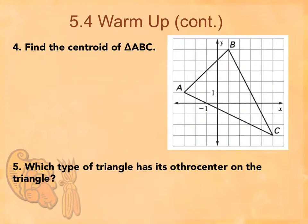Number four says find the centroid of triangle ABC. So the centroid means it's got three medians. The medians mean that they're hitting each opposite side at its midpoint. So I've got to find the midpoint of each of these sides.